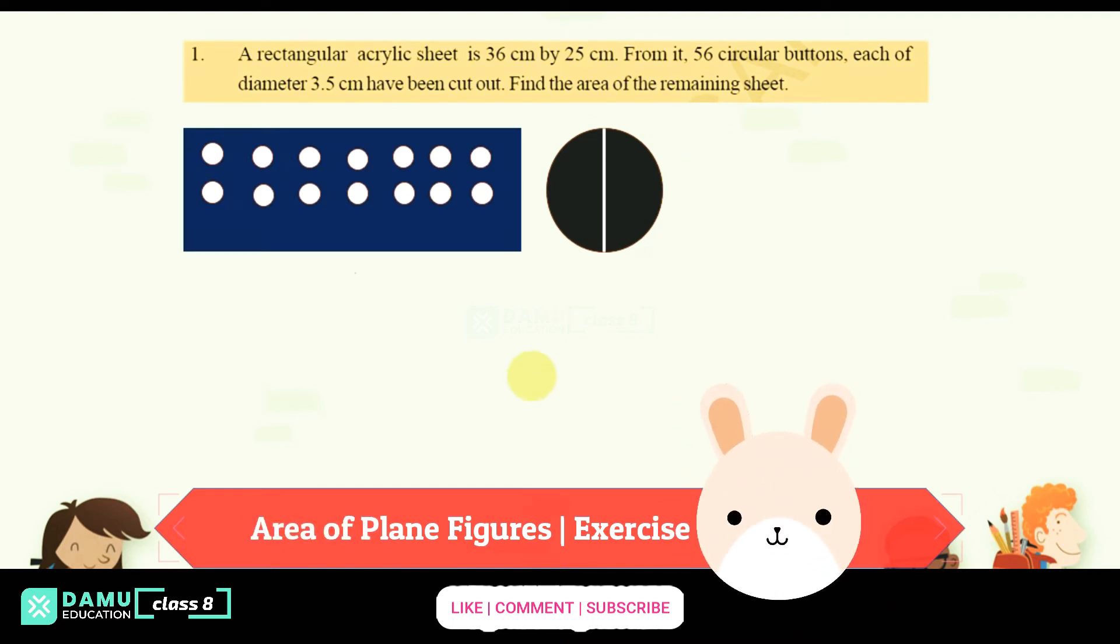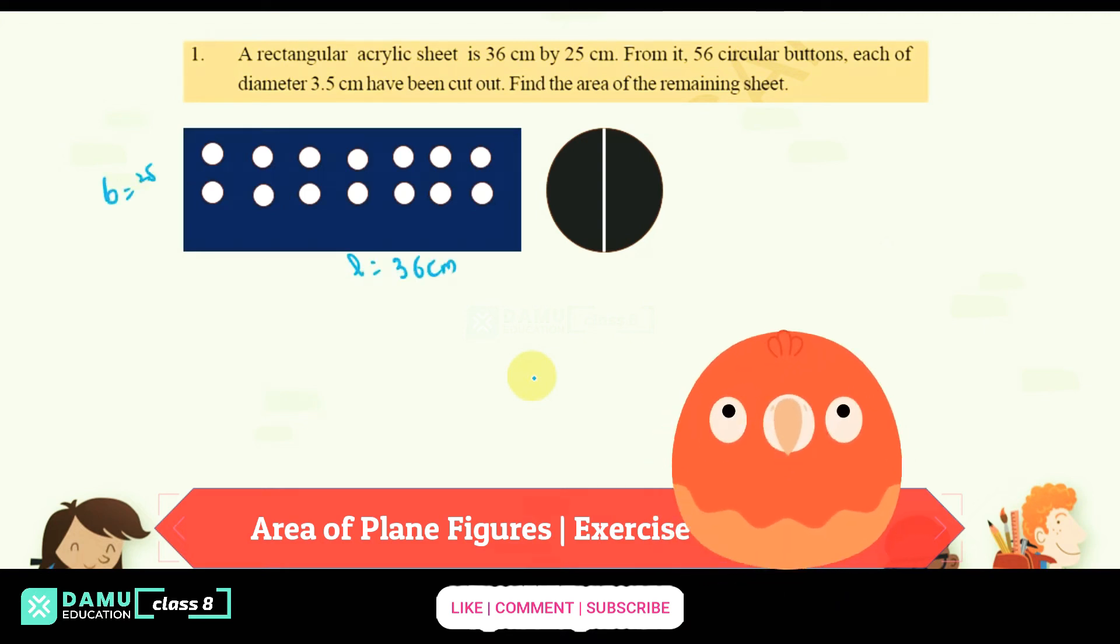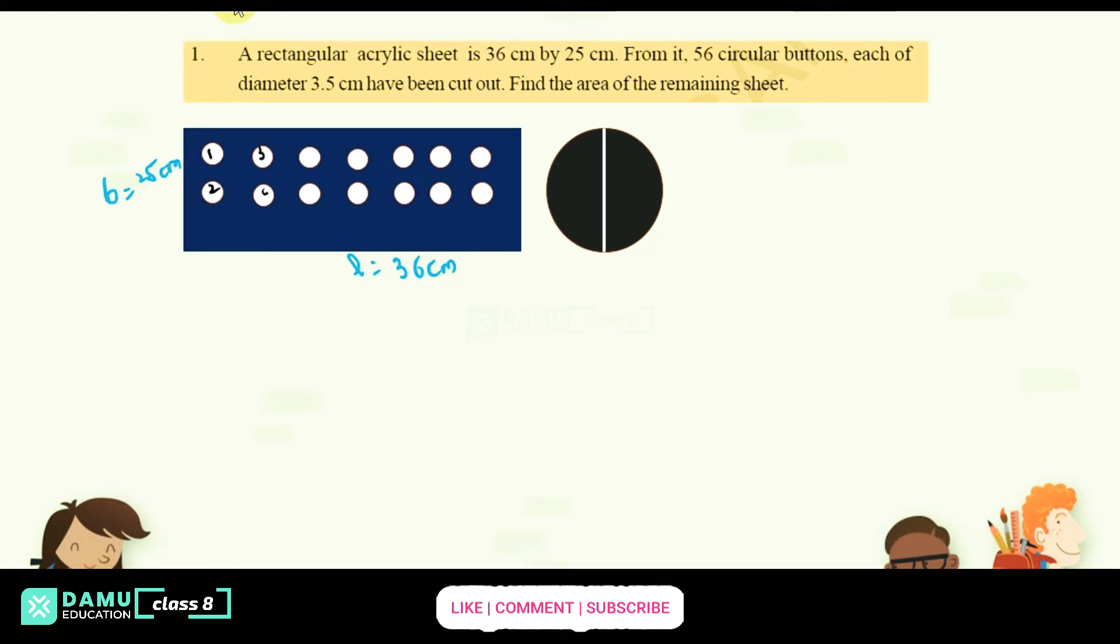So let's take rectangular sheet, length will be L will be 36 cm, then breadth will be 25 cm. Then what they are telling is, so here 56 circular buttons have been cut out. So let's take 1, 2, 3, 4, 5, 6, 7, 8. Like that, how many number of buttons is cut? 56.